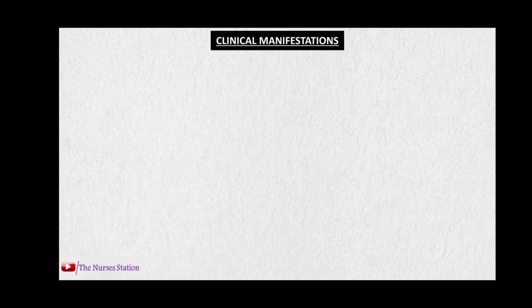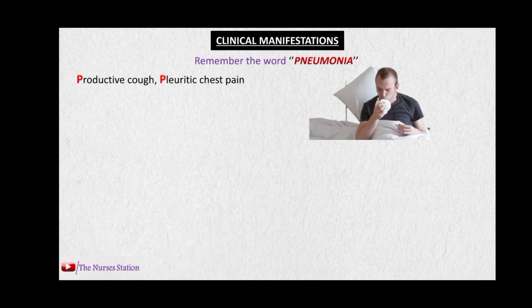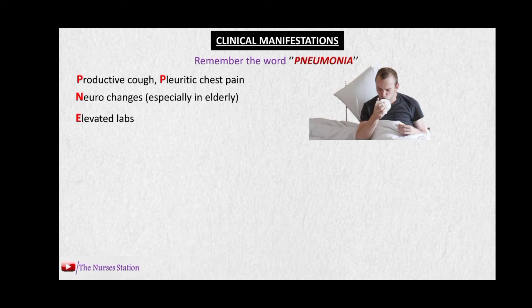To remember the clinical manifestations, we use the word PNEUMONIA. P stands for productive cough — the patient may cough with sputum. There may be pleuritic chest pain due to inflammation of the pleural membranes, which usually aggravates with coughing. There may be neuro changes, especially in elderly patients, who may feel drowsiness or disorientation.